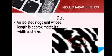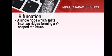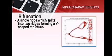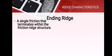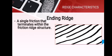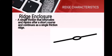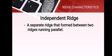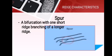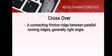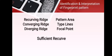First is the dot — an isolated ridge unit whose length approximates its width and size. Bifurcation: a single ridge which splits into two ridges forming a Y-shaped structure. Ending ridge: a single friction ridge that terminates within the friction ridge structure. Ridge enclosure: a single friction ridge that bifurcates and rejoins after a short course and continues as a single friction ridge. Independent ridge: a separate ridge that forms between two ridges running parallel. Spur: a bifurcation with one short ridge branching off a longer ridge. Crossover: a connecting friction ridge between parallel running ridges, generally at a right angle.